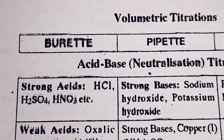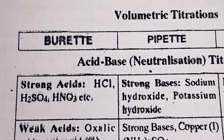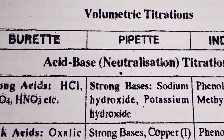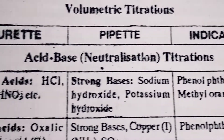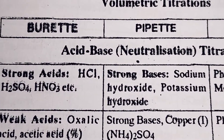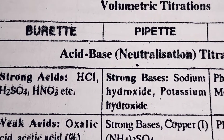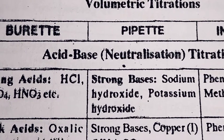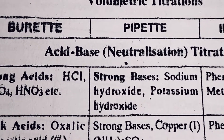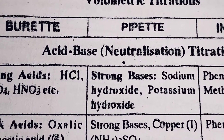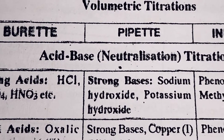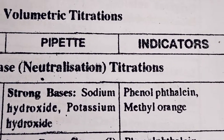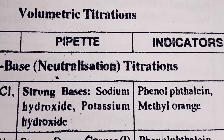In volumetric analysis, let's take a look at the pipette, indicator, and conical flask. Let's also take a look at the chemicals and the types of titration.